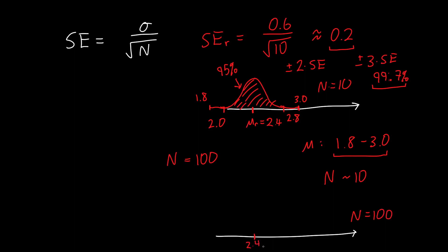Let's say we find the same mean of 2.4. Now our standard error is equal to 0.02 instead of 0.2, so our distribution is much tighter. There's a 99.7% chance that our mean is between 2.34 and 2.36. We've got a much tighter estimate of our mean because we've got a much larger number of patients.